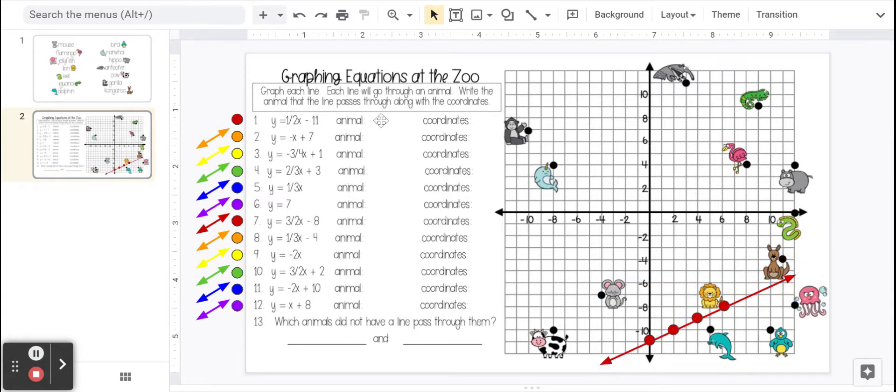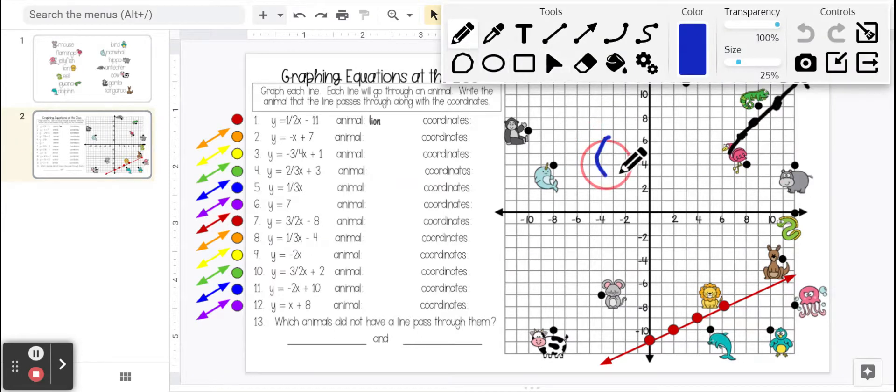All right, so our animal is the lion. And then we need to have our coordinates. Coordinates are x, y. So we always start here at the origin. We're going to go over to six. So that'll be our first number. We're going to get on the elevator, and we're going to go down, and we'll stop at negative eight. So our coordinates are six, negative eight. So you can go ahead and type that into that little text box right here.